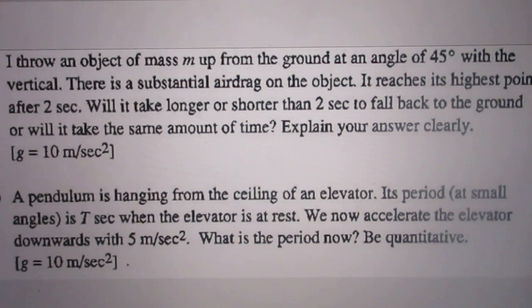Second question. A pendulum is hanging from the ceiling of an elevator. Its period at small angles is capital T seconds when the elevator is at rest. We now accelerate the elevator downwards with five meters per second square.